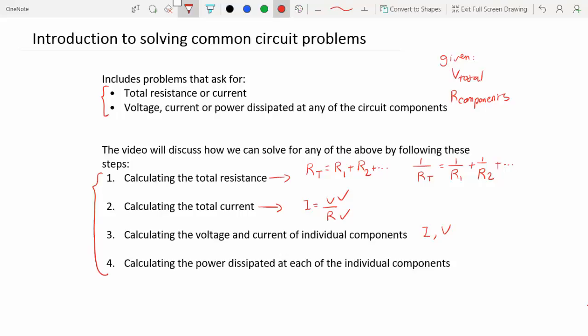And then finally, once you have those, you can solve for the power dissipated at them using P equals V I. In the videos following this one, we'll be going over how to calculate the total resistance and also how to calculate the voltage and current of the individual components, since these are the two most difficult steps, and then we'll try to solve a problem of this type.